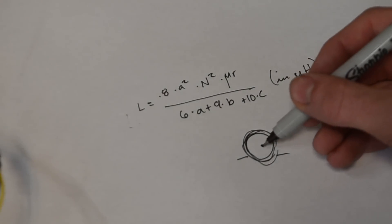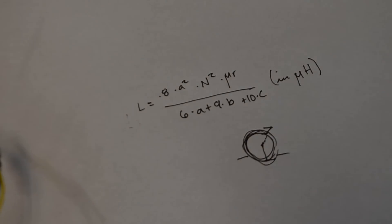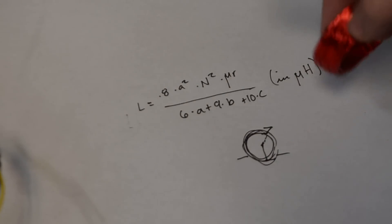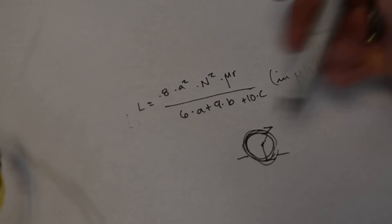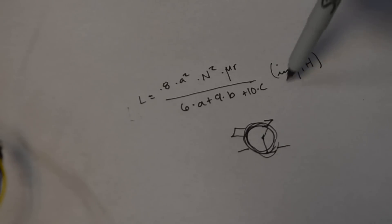A is going to be equal to the measurement from the center of the circle to the outer diameter. Mu R is going to be equal to the inside radius. B is going to be equal to the width of the coil so basically this edge here. And C is going to be equal to the height of the coil. So basically C is going to be equal to this small edge here. And when you plug all these in it should give you something in microhenrys. And that inductance value should be very close to the value of your air core inductor.